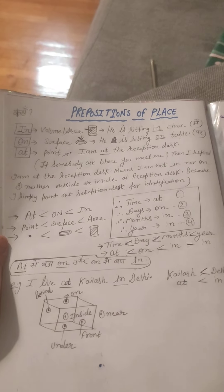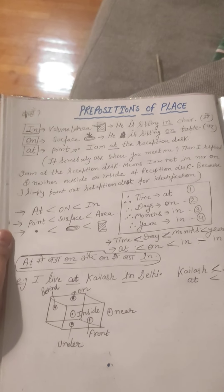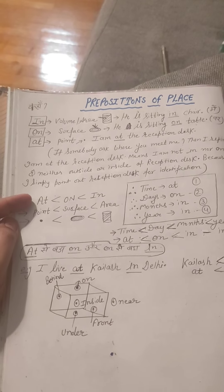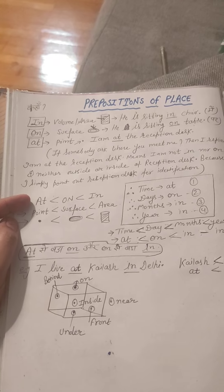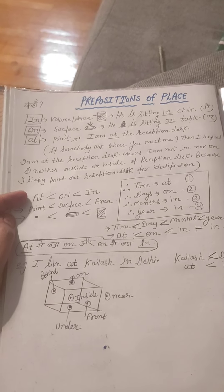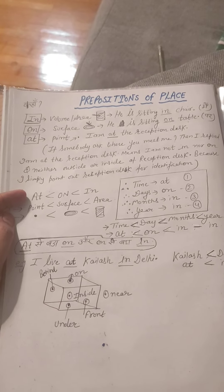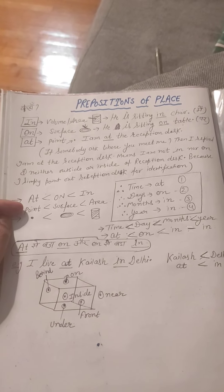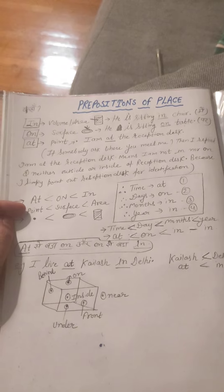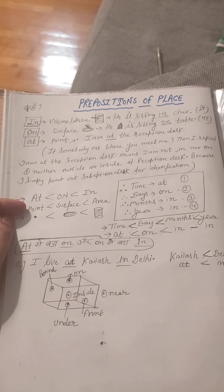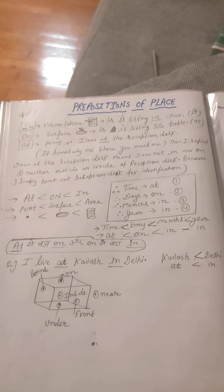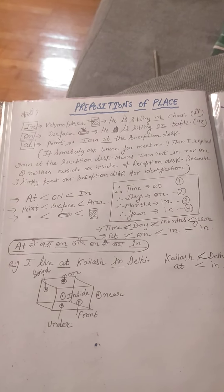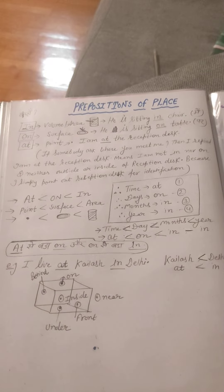Preposition of place. Means kahaan. In — volume, area. He is sitting in a chair. On — surface. He is sitting on the table.